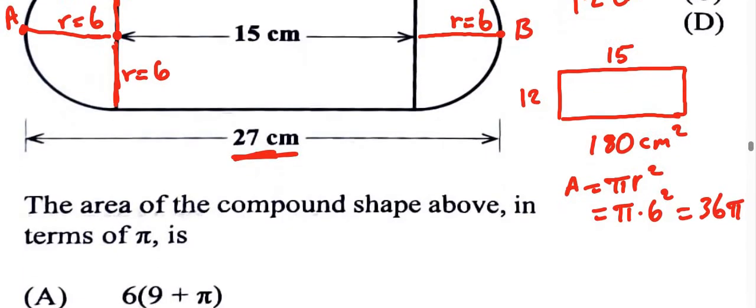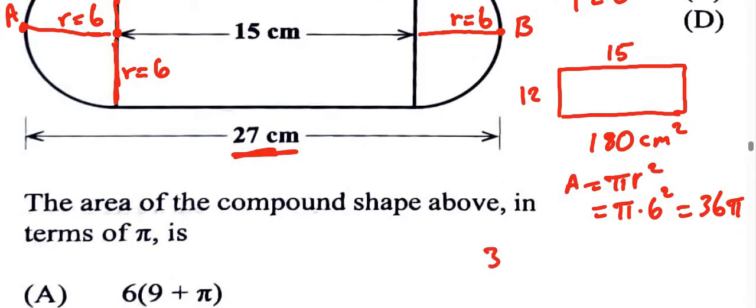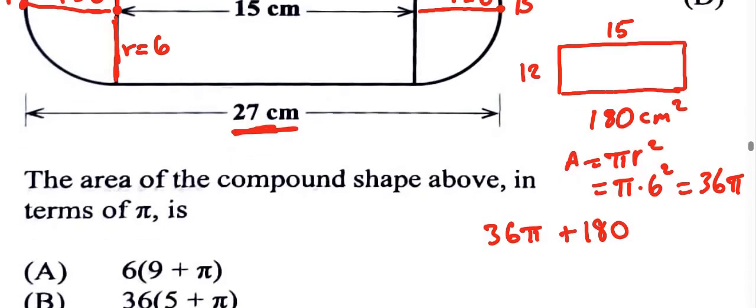Our combined area is 36 pi plus 180. Both measurements are in centimeters squared, but we don't have to put those on. Now we want to factorize. It might be kind of challenging for you to figure out how you're going to factorize this.